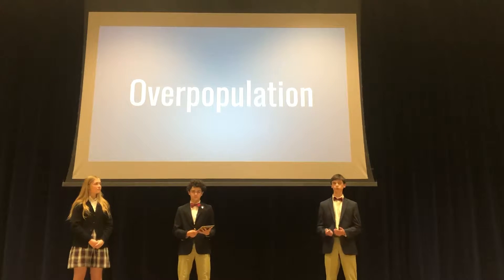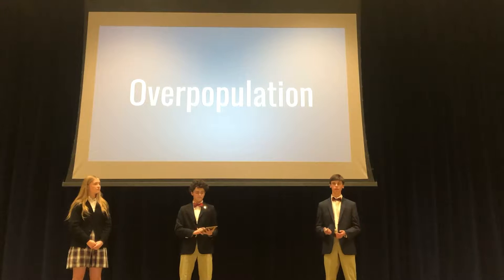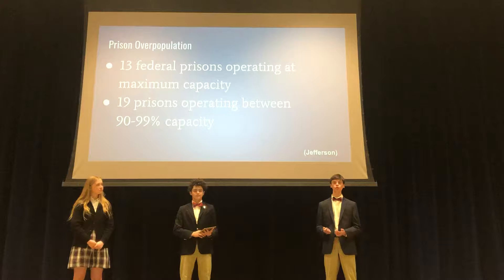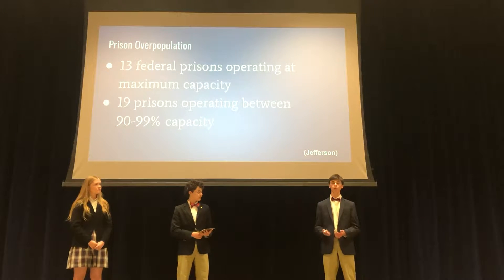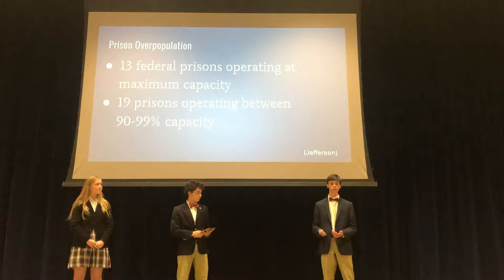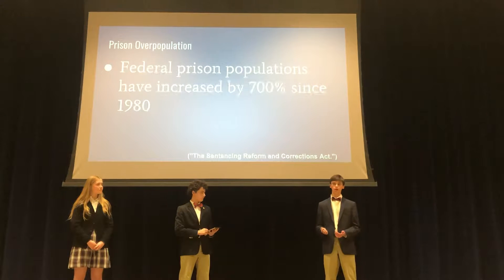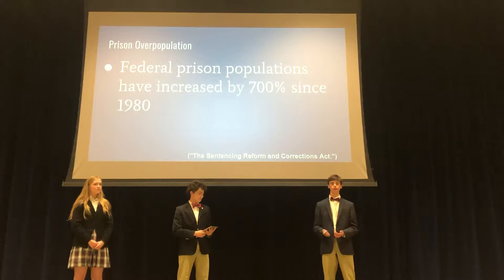There is no doubt that there are multiple problems within our American federal prison system, but the most urgent problem that must be faced is the fact that it is extremely overpopulated. There are 102 federal prisons in the United States, 13 of which are operating at at least 100% full, and there are 19 others operating between 90 and 99% full. So that's 32 of the 102 federal prisons — roughly 30% — operating with very few to no beds at all. This is mainly due to the fact that federal prison populations have increased by 700% since 1980.